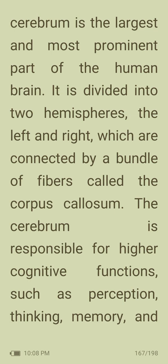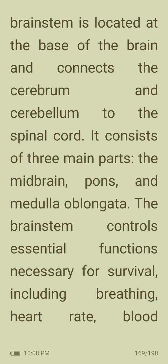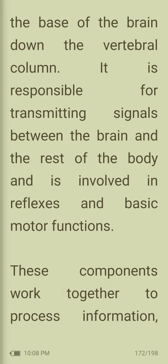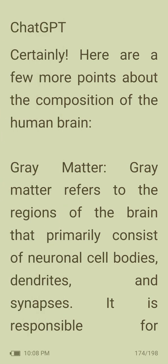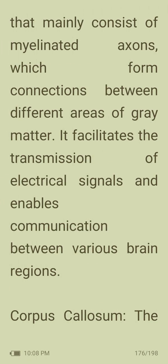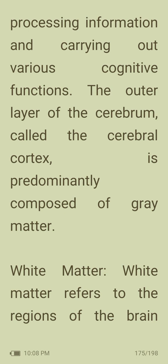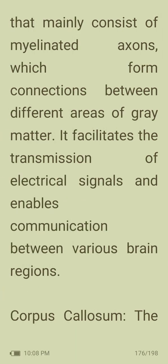The major structural components of the brain include the cerebrum — the largest and most prominent part — the cerebellum, brainstem, and limbic system. Gray matter refers to regions primarily consisting of neuronal cell bodies, dendrites, and synapses; it is responsible for processing information and carrying out various cognitive functions, and the outer layer of the cerebrum — the cerebral cortex — is predominantly composed of gray matter. White matter refers to regions mainly consisting of myelinated axons that form connections between different areas of gray matter, facilitating the transmission of electrical signals and enabling communication between various brain regions.